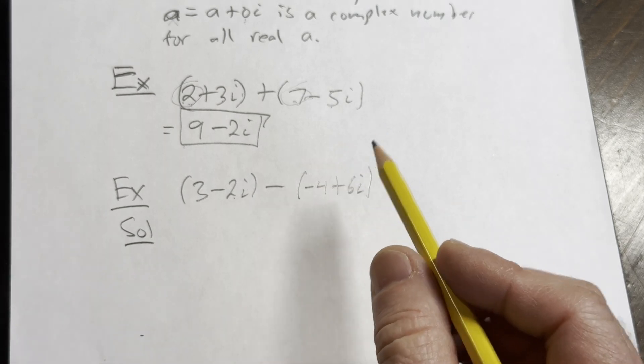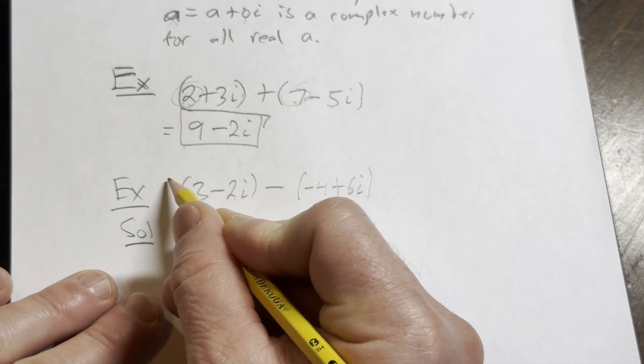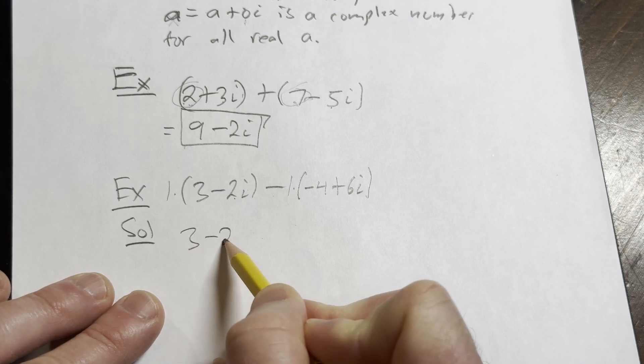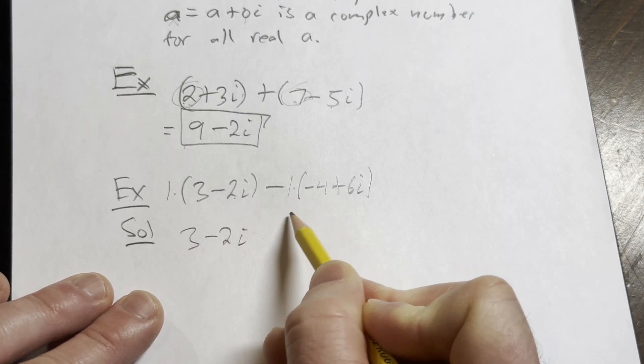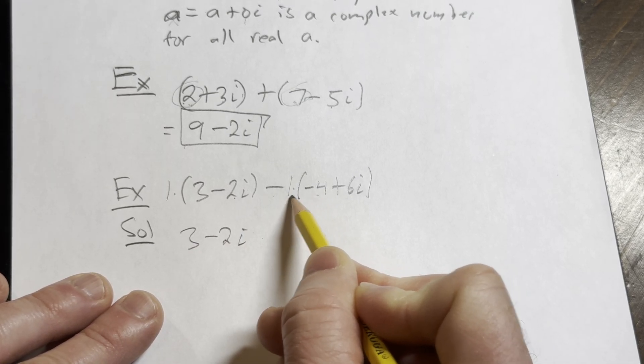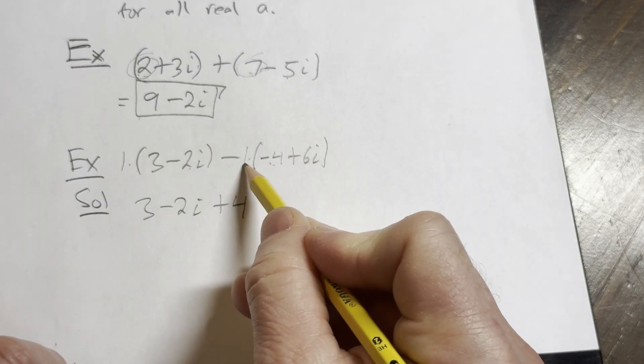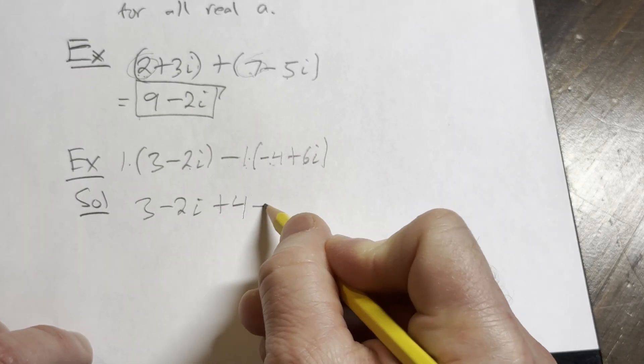Here though, you have to be careful because there's a minus sign. So there is a 1 here and there's a 1 here. So this is 3 minus 2i. And then here you distribute the minus 1. So minus 1 times minus 4 is plus 4, and minus 1 times positive 6i is minus 6i.